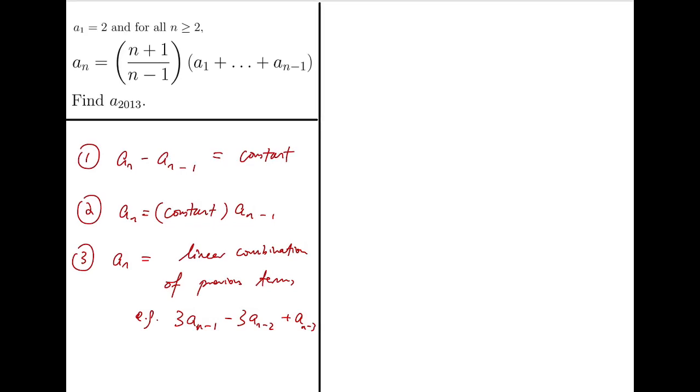But apparently our equation does not look like any of the three types that I have mentioned just now, because the right hand side consists of the terms in the sequence all the way down to a_1, not just a few previous terms. So I went for another direction to solve this problem.